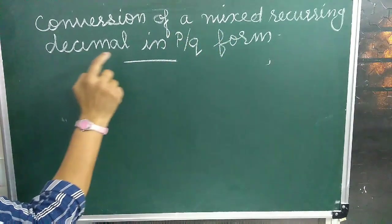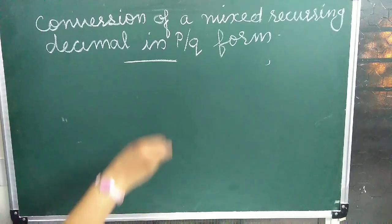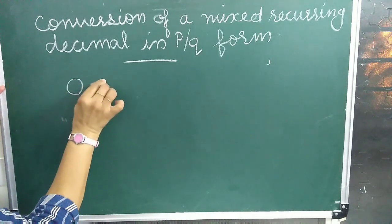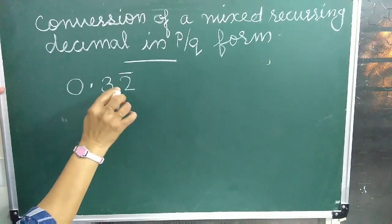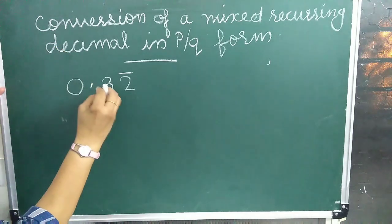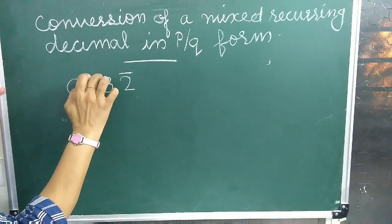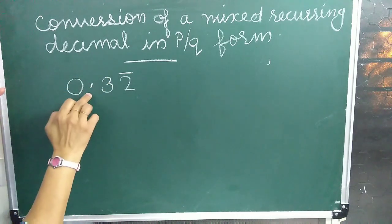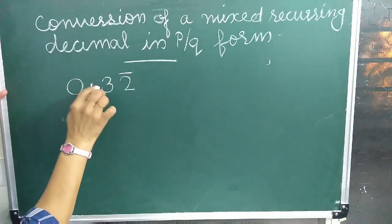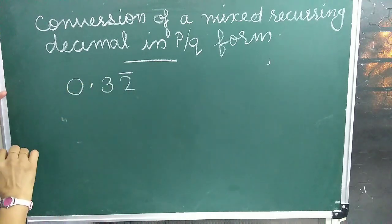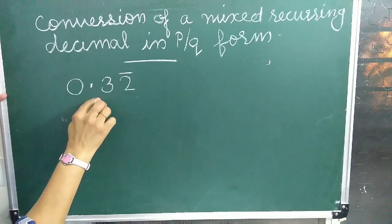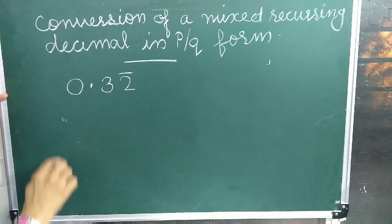Conversion of a mixed recurring decimal into P upon Q form. What is a mixed recurring decimal? For example, 0.32 bar is a mixed recurring decimal. In a mixed recurring decimal, there are some digits which don't have a bar on them. In this number, 3 doesn't have a bar on it. Therefore, this is a mixed recurring decimal. Now let us see how to convert this mixed recurring decimal into P upon Q form.